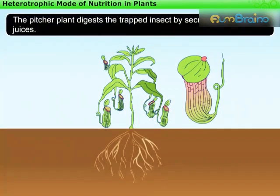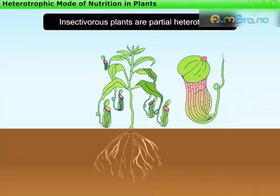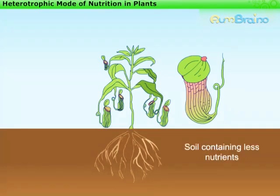The pitcher plant digests the trapped insect by secreting digestive juices. Insectivorous plants are thus partial heterotrophs. These plants, also called insect-eating plants, grow in soil containing fewer nutrients, so they feed on animals like insects to fulfill their requirement of nutrients.